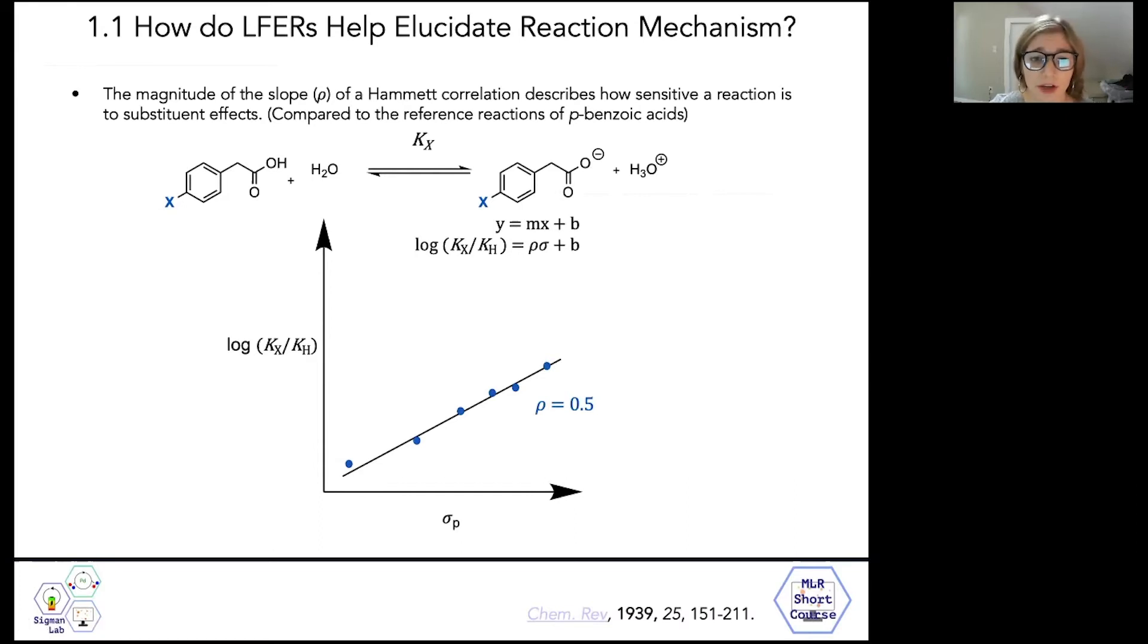It's interesting to note that when one more carbon is added, so when we're talking about the ionization of phenylpropanoic acids, the rho value is 0.21, so this isn't necessarily a linear response.